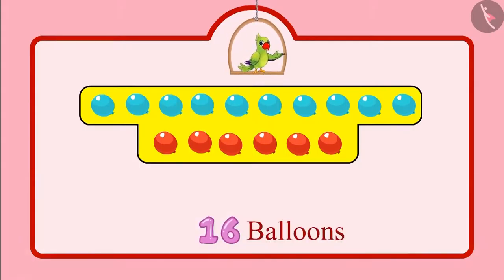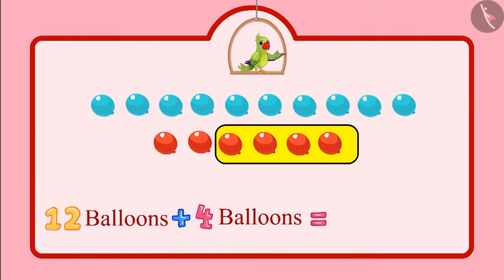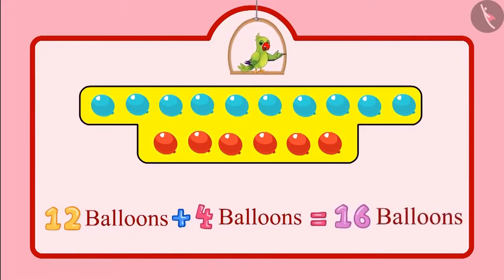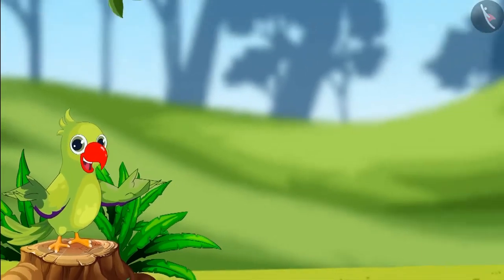Yes children, so 12 and 4 balloons make a total of 16 balloons. So children, this means that when we add 12 and 4, then we get a total of 16. That is all for today.